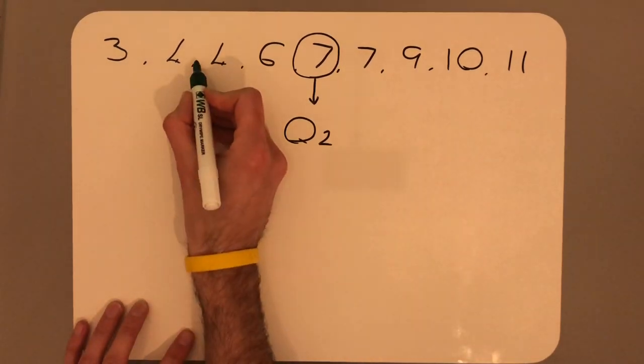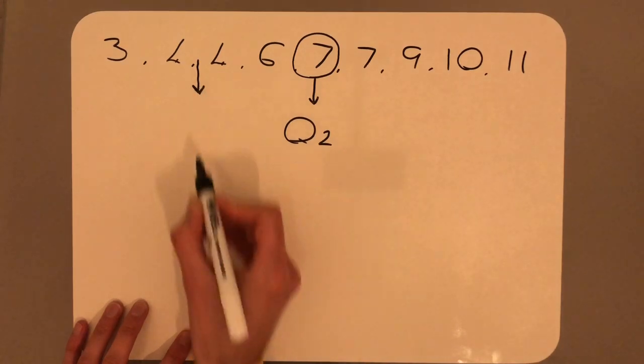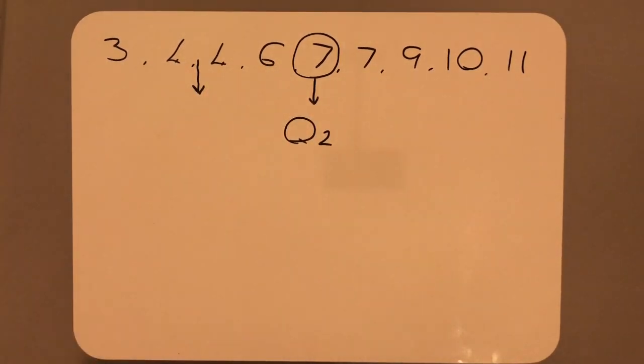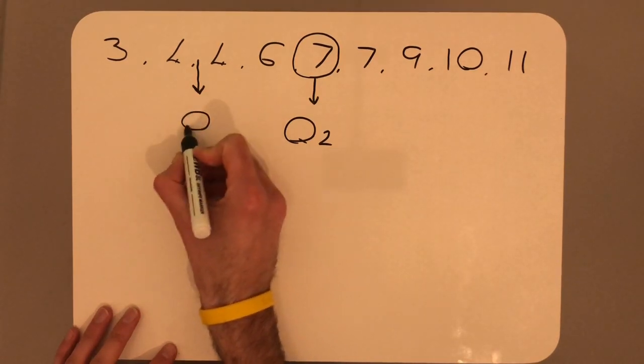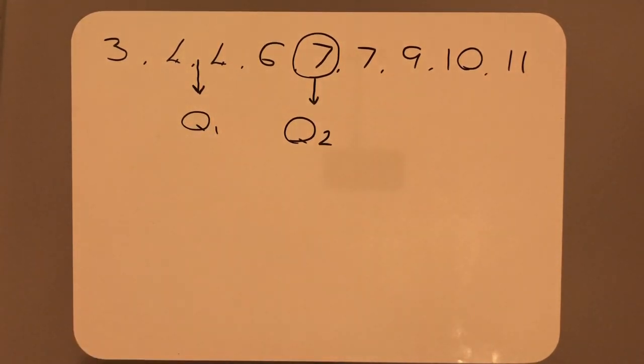One, two. Let's put an arrow here. One, two. Two terms on either side of the median of the lower half. The median of the lower half we will call Q1, quartile 1.